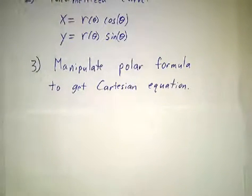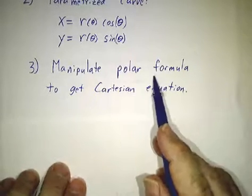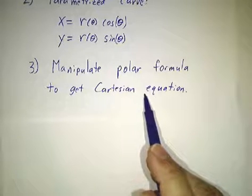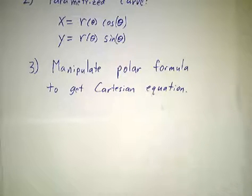And the last method is we can play with the formula sometimes. This doesn't always work. We can sometimes play with the formula to put everything back in Cartesian coordinates and then we just recognize what everything is saying in Cartesian coordinates.